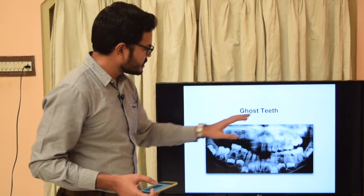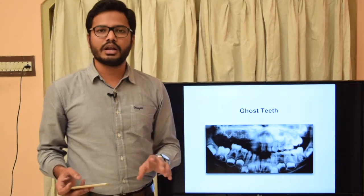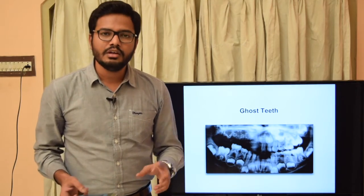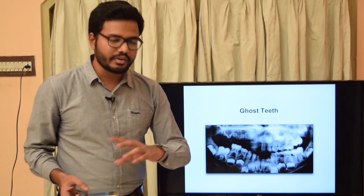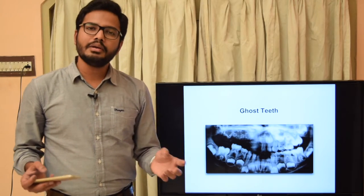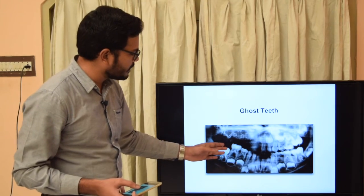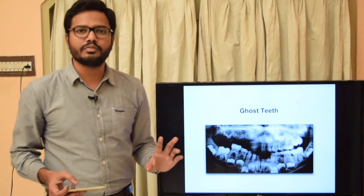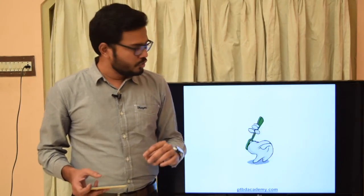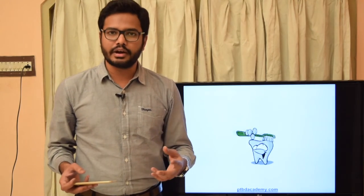Ghost teeth are seen characteristically in a condition called regional odontodysplasia, where there is improper growth of enamel and dentin. The teeth are very brittle and enamel and dentin appear extremely thin, with a characteristic ghost-like appearance with enlarged pulp chambers and root canals. So far we have discussed a few subtopics, and in subsequent videos we will try to cover more subtopics. Thank you.